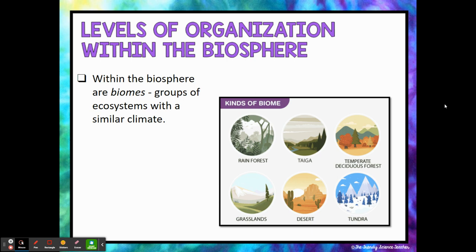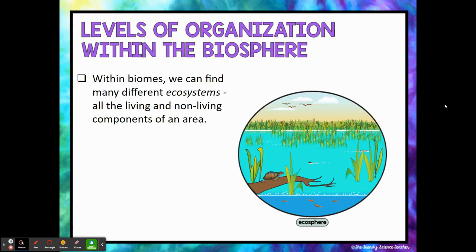Now within the biosphere, we can break it down into different biomes. Biomes are just groups of ecosystems that have similar climates — you typically learn about this at the middle school level, so we're not going to get into a lot of detail about specific biomes. Just know that biomes exist within the biosphere and are ways we sort of group ecosystems together that have similar climates. Within those biomes, we can find many different ecosystems, and this will be the focus for our ecology unit. We're going to really dive into some different ecosystems and look at all the living and non-living components of that area.